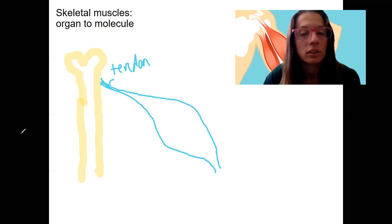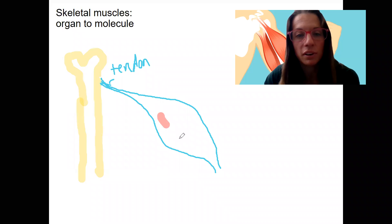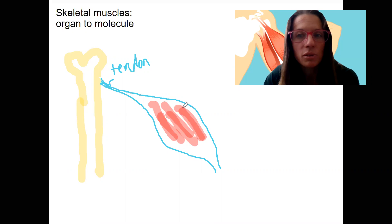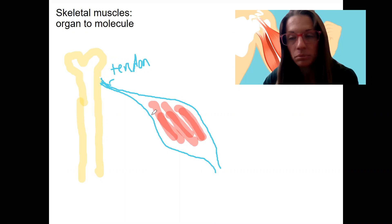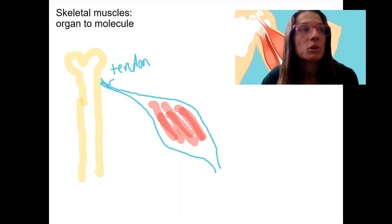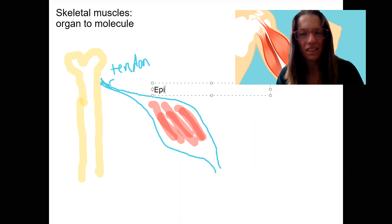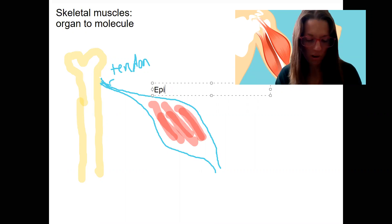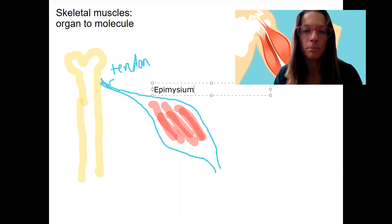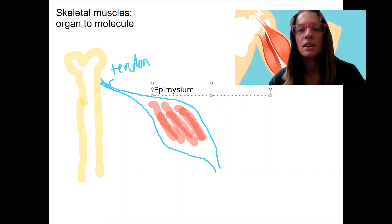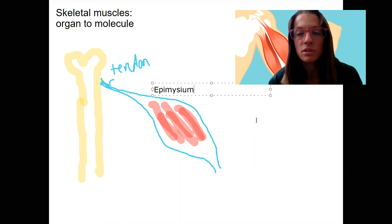Inside the muscle, there are going to be fascicles that are made up of cells that are made up of molecules. What I want to do first is tell you what this outside layer is called. 'Epi' — remember that word? Epi means on top of or above. And then what is this stuff? This is muscle, so instead of other words you've heard before, this is going to be 'myseum.' Epimysium is the connective tissue that surrounds muscle.